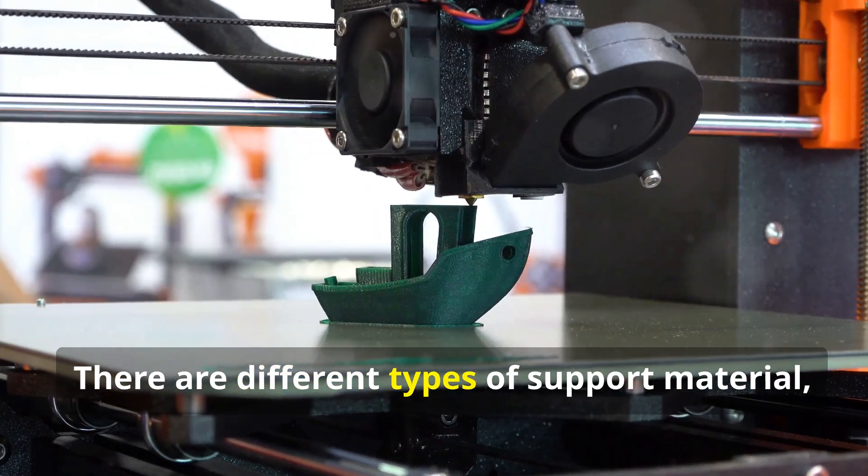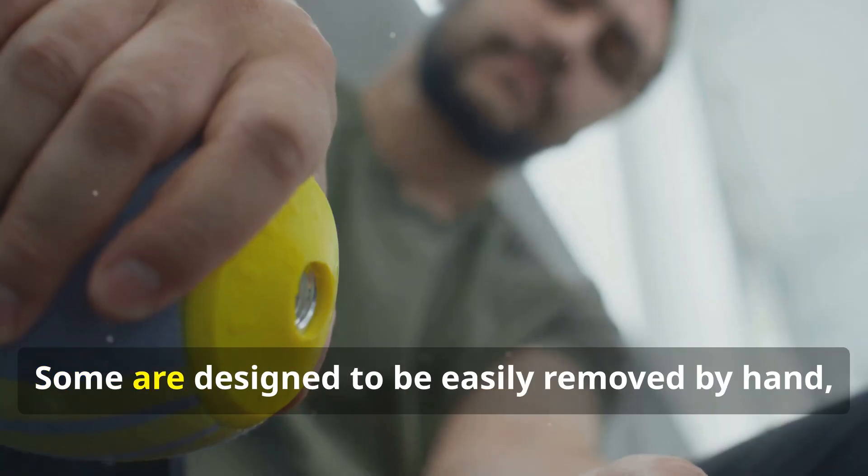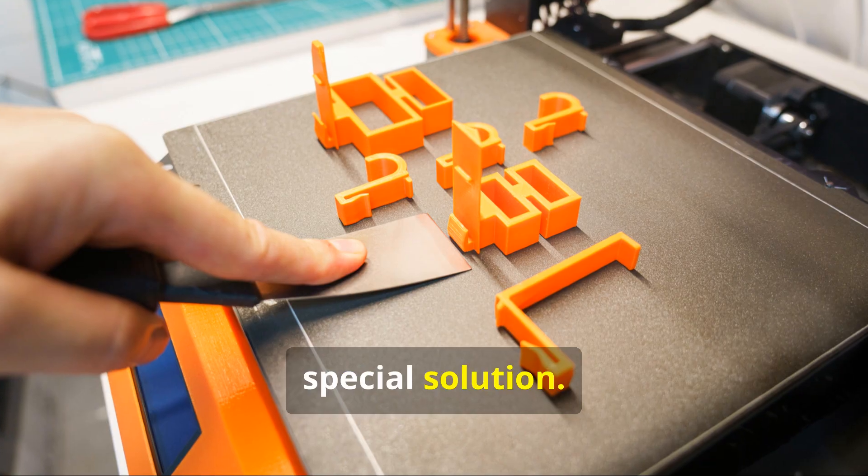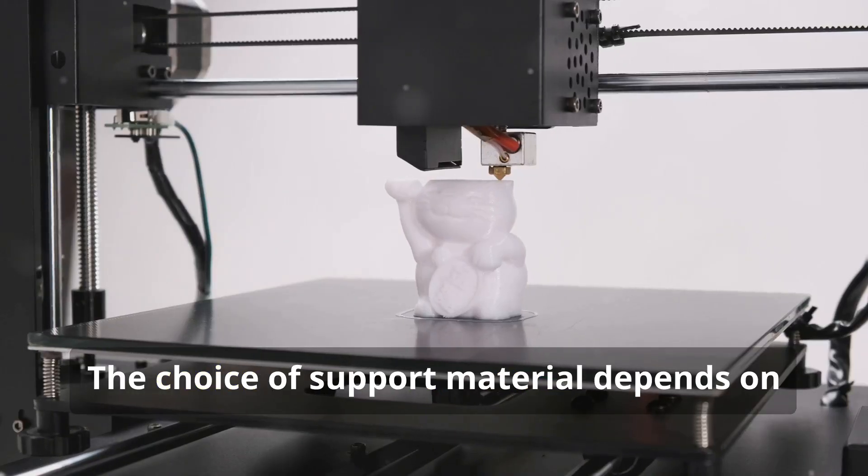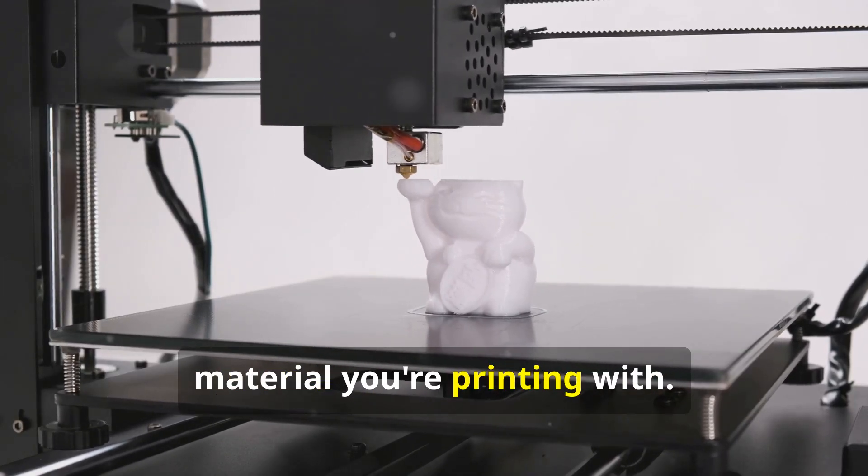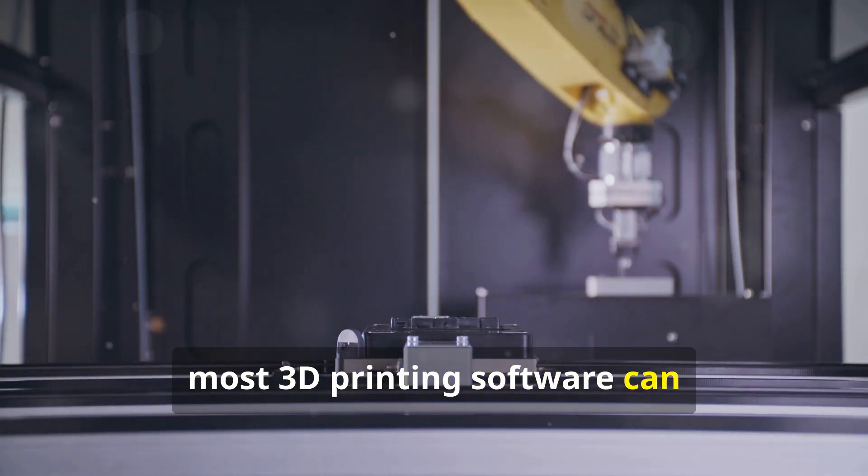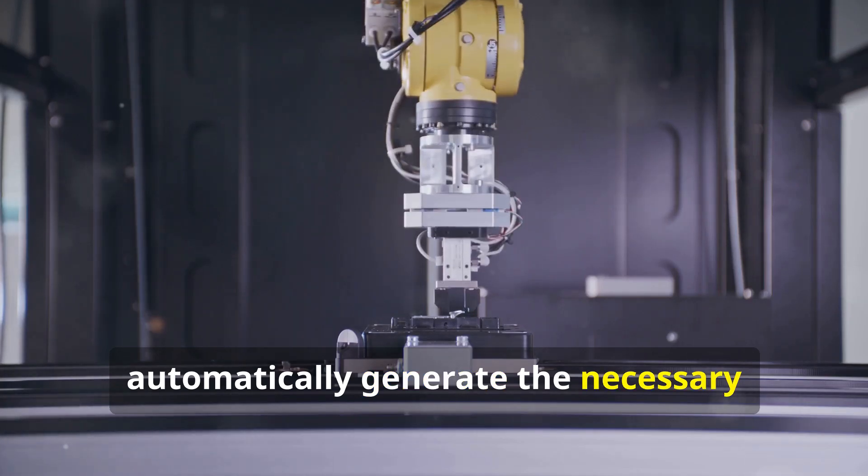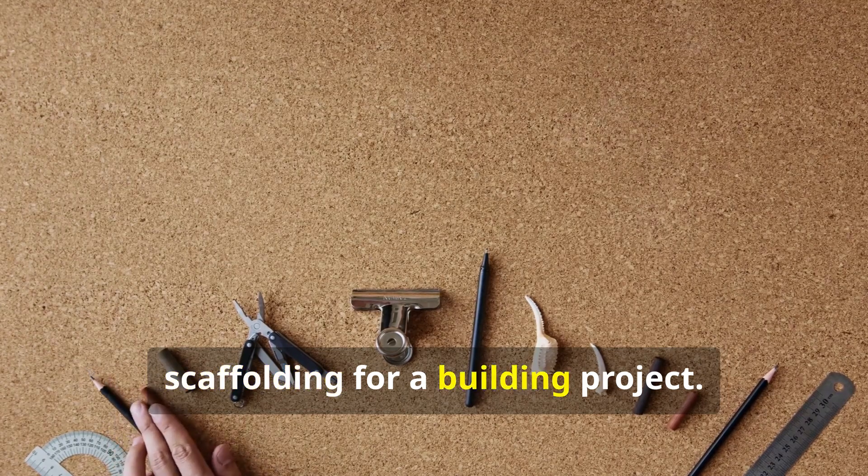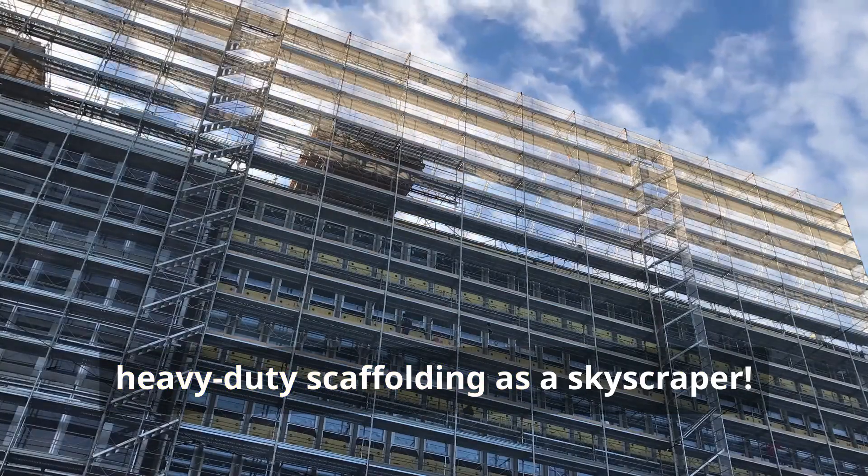There are different types of support material, each with its own advantages. Some are designed to be easily removed by hand, while others require dissolving in a special solution. The choice of support material depends on the complexity of your design and the material you're printing with. Luckily, most 3D printing software can automatically generate the necessary supports based on your design. It's like choosing the right type of scaffolding for a building project. A small shed doesn't need the same heavy-duty scaffolding as a skyscraper.